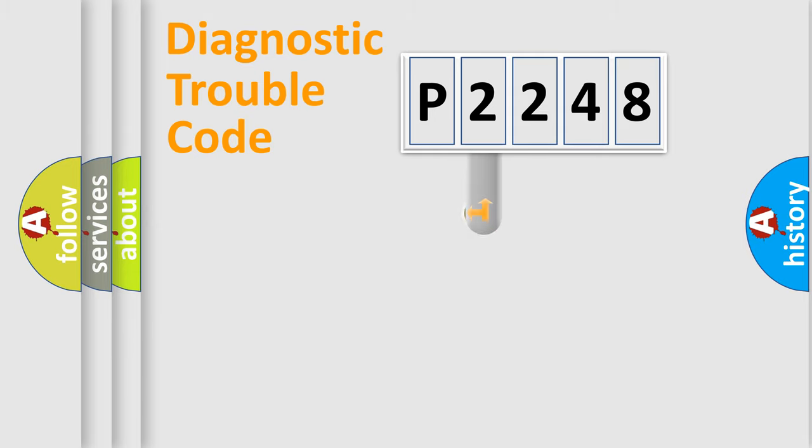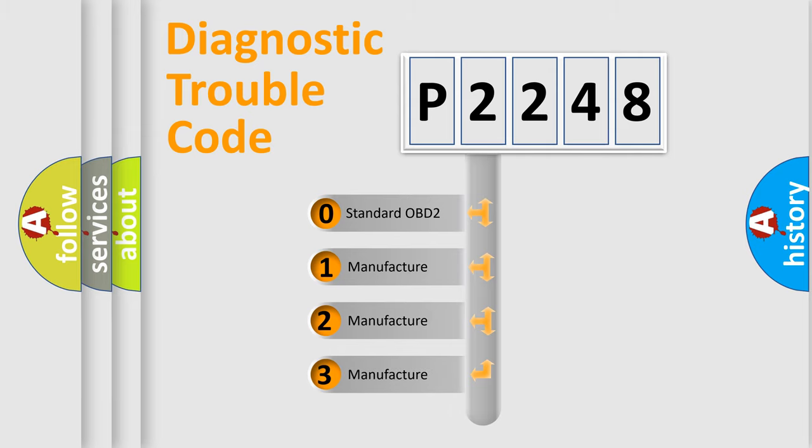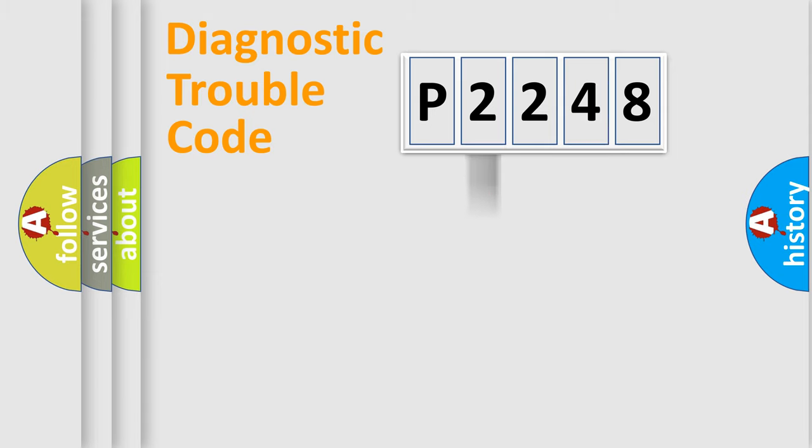This distribution is defined in the first character code. If the second character is expressed as zero, it is a standardized error. In the case of numbers 1, 2, or 3, it is a manufacturer-specific expression of the car error.